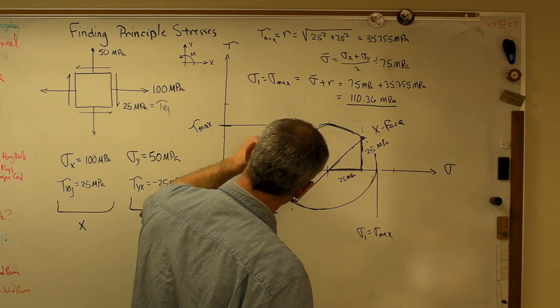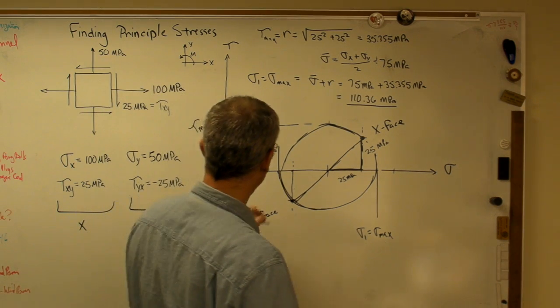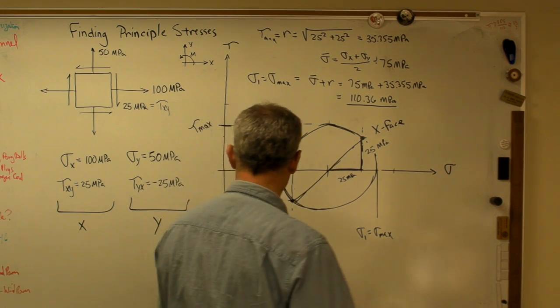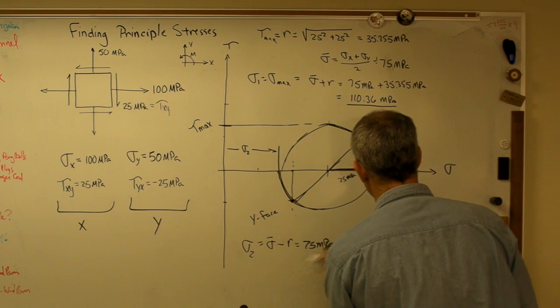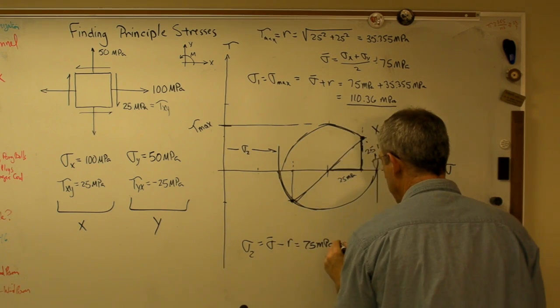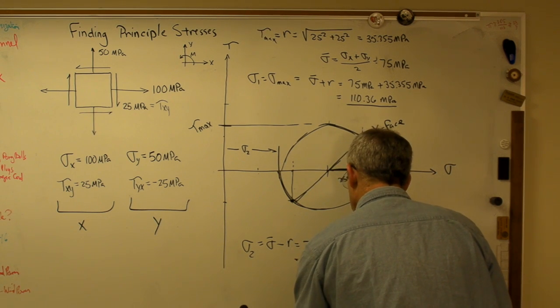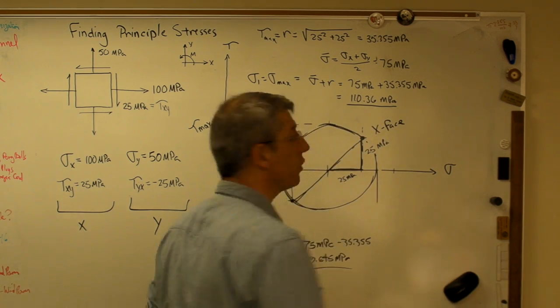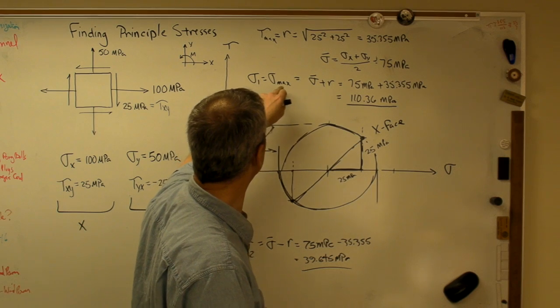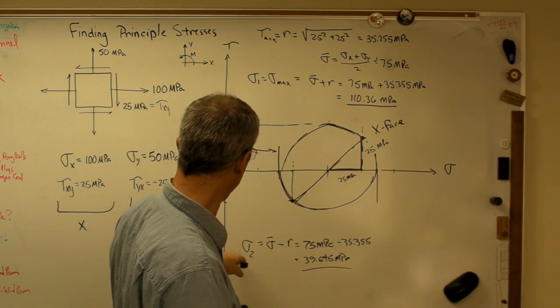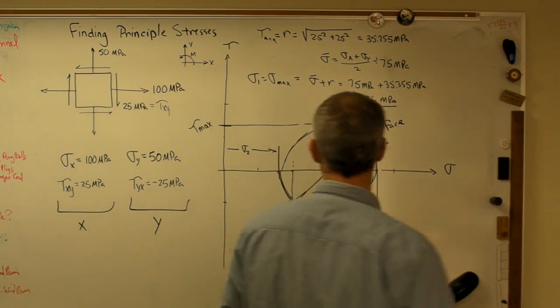Now, let's try to put sigma 2 down here. Sigma 2 is the minimum normal stress that exists at this point. Well, that's pretty obviously sigma bar minus the radius. And that turns out to be 75 MPa. I'm going to erase some stuff here because I have a very small board to work with. 35.355, and that works out to be 39.645 MPa. So your principal stresses are sigma max equals your radius, 35.355. Sigma 1 equals sigma max, that's 110.36 MPa. Sigma 2 is the minimum normal stress, and that's 39.645.